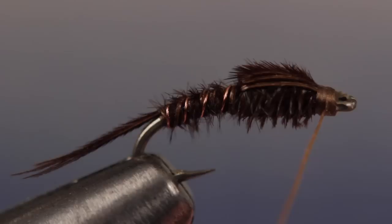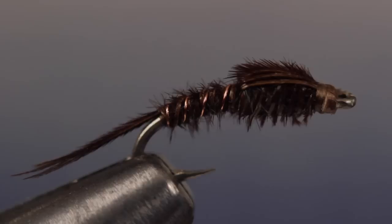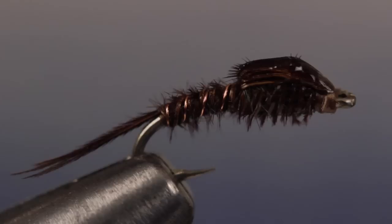As you can see here, with this method, you end up with a neat little head and a hook eye that's clear of obstruction. A very small drop of head cement applied to the wing case and down onto the thread wraps isn't necessary, but really adds something in terms of look and durability. Just make sure to keep it out of the hook eye.